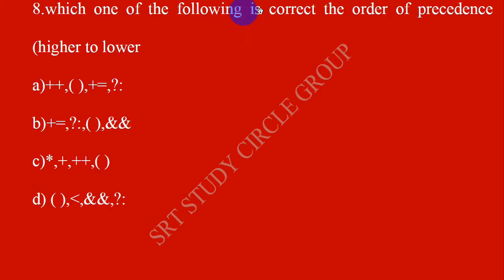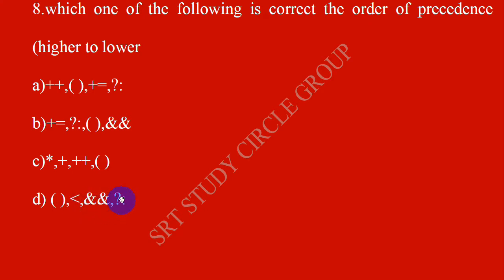Which of the following is correct about the order of precedence? Order of precedence goes from higher to lower. How to execute? The answer is D. First bracket, then less than greater than comparison, then the conditional operator. The answer is D, higher to lower.